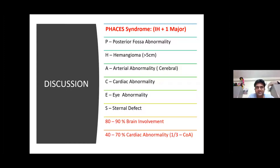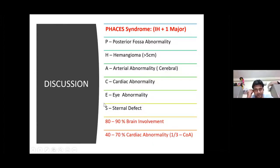A small discussion about PHACES syndrome — these are acronyms. P stands for Posterior fossa abnormality. H stands for Hemangioma — usually there will be a large hemangioma, with a size mentioned as more than 5 centimeters. A is for Arterial abnormality, like cerebral vascular abnormality. C is for Cardiac abnormality. E is for Eye abnormality. And rarely there may be Sternal abnormality, which completes the acronym PHACES.